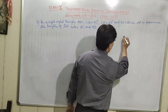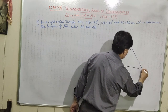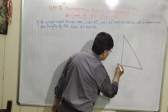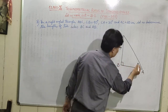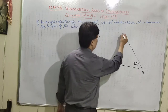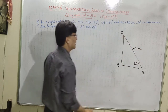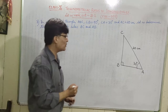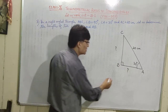Let us draw the figure. This is the right angle triangle ABC with angle B equal to 90 degrees. This is angle A which is 30 degrees. AC is given as 20 centimeters. In this case you have to find out the length of the two sides BC as well as AB.